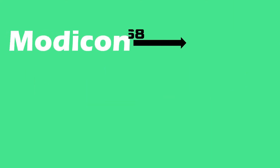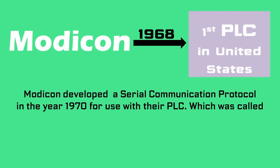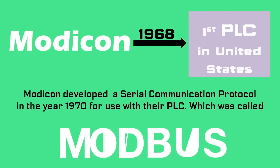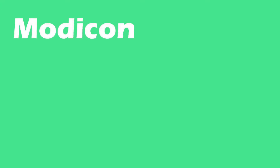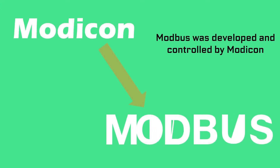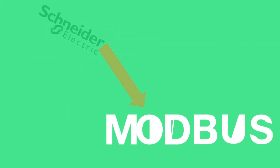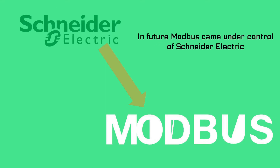Modicon created the first programmable logic controller in the United States in 1968. It was this company Modicon which developed Modbus, a serial communication protocol for use in their PLCs. Post acquisitions and merger of companies, Modbus protocol came under the umbrella of Schneider Electric.